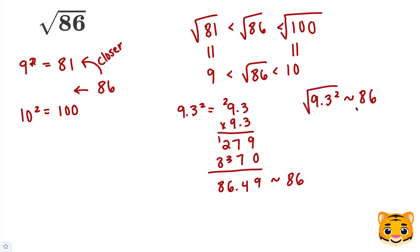Taking the square root of both sides, we'll cancel out the squared and the square root for the 9.3, and then we'll obtain our answer, that 9.3 is approximately the square root of 86.